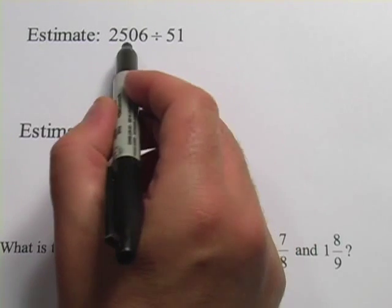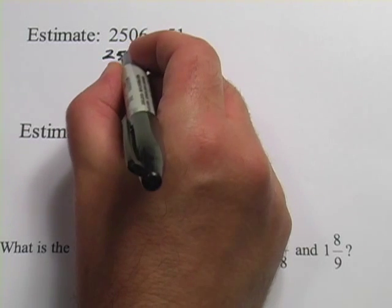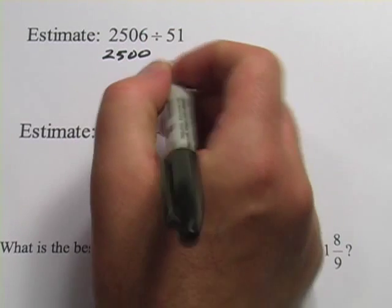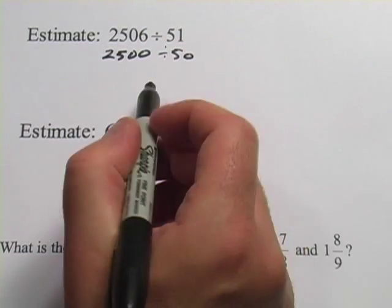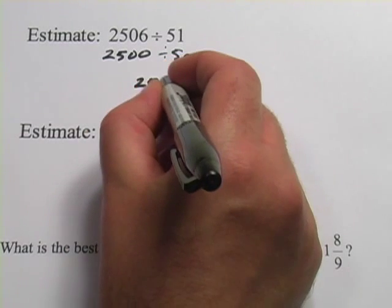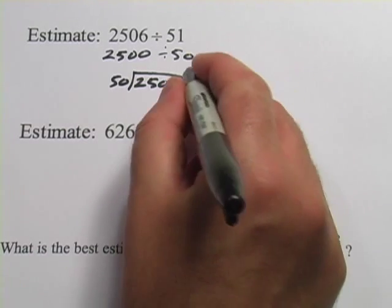In this case, 2,506 divided by 51, I would round this down to 2,500 and this down to 50. And now if you're going to do 2,500 divided by 50, you're going to get 50.